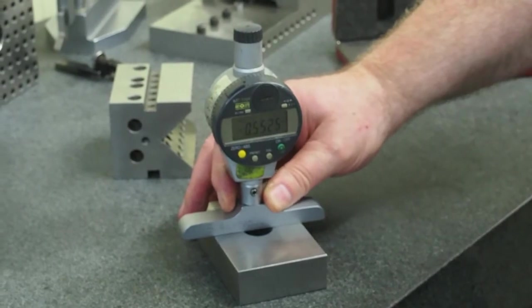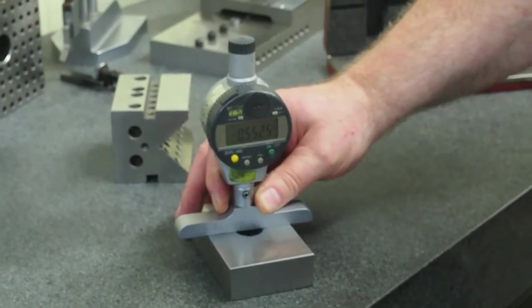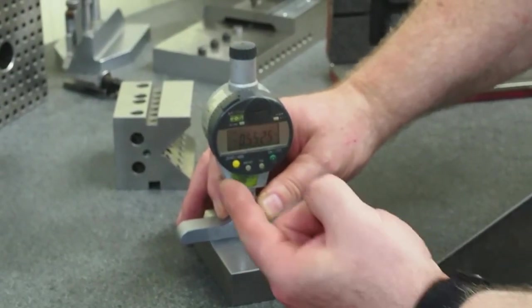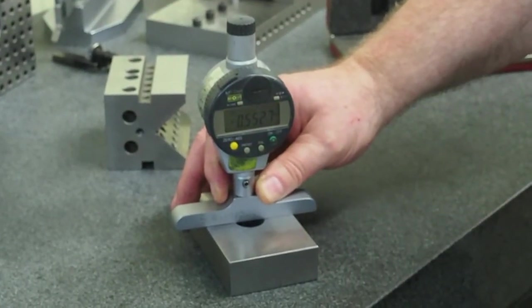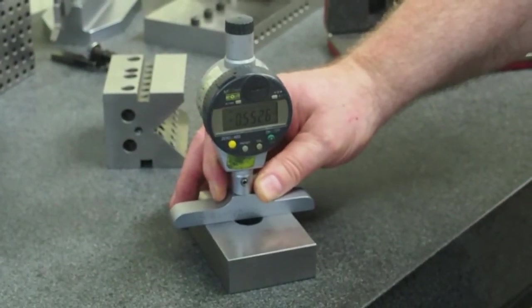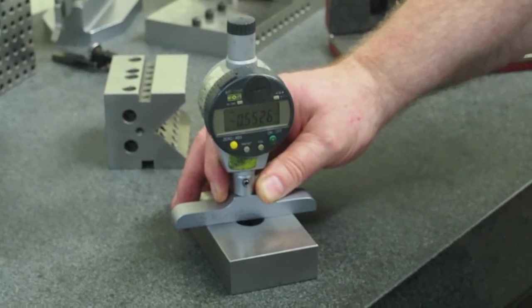We're getting pretty much the same reading we had with the Starrett, but you can see how much easier and faster. Plus, I read the number. No more of the twenty-five thousandths errors that you get because you're used to reading your micrometer rather than your depth mic.